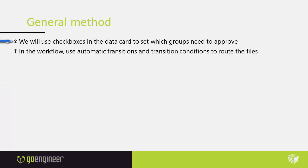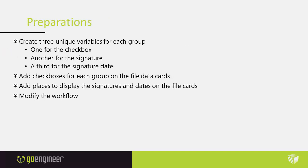The overall method we will use is that we will use checkboxes in the data card to set which groups need to approve. Then in the workflow we will use automatic transitions and transition conditions to route the files until all signatures are captured, and then we will release the file. Before we modify the workflow there are some preparations we need to make. First we need to create three unique variables for each group: one for the checkbox, another for the signature, and a third variable for the signature date. Then we need to add checkboxes for each group on the file data cards, add places to display the signatures and dates on the file cards, and then modify the workflow.